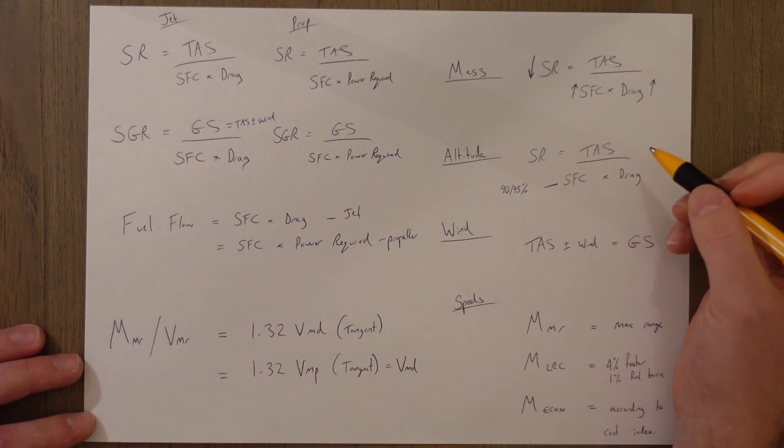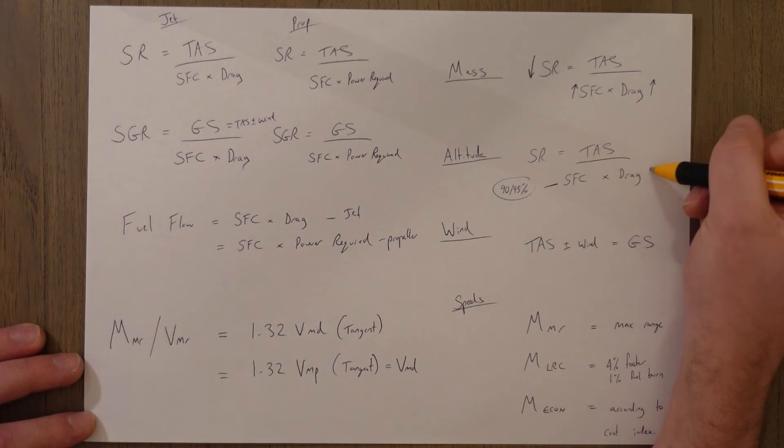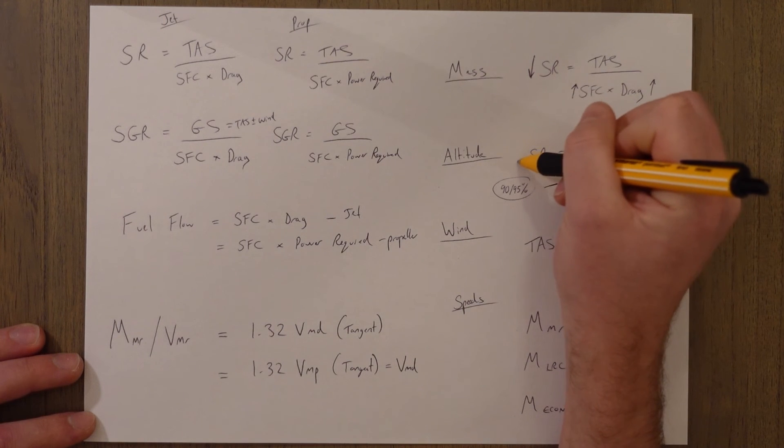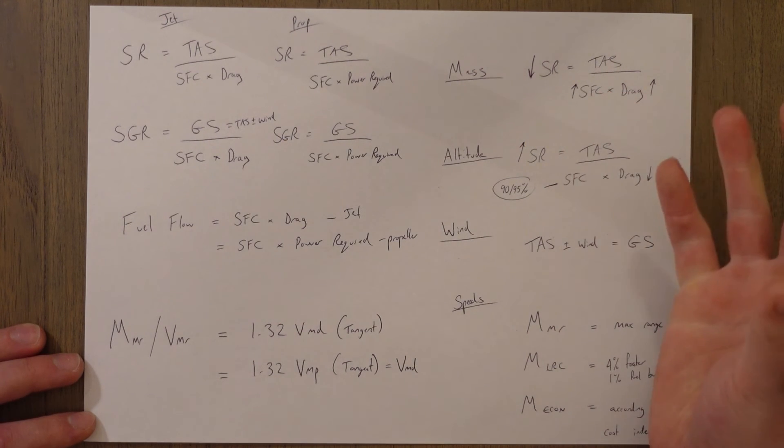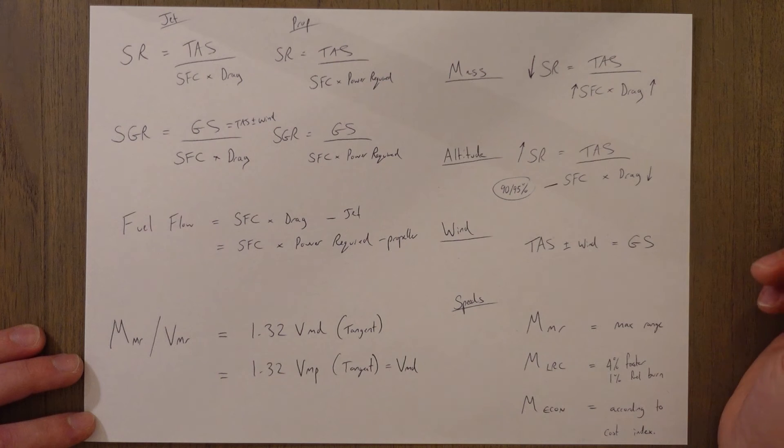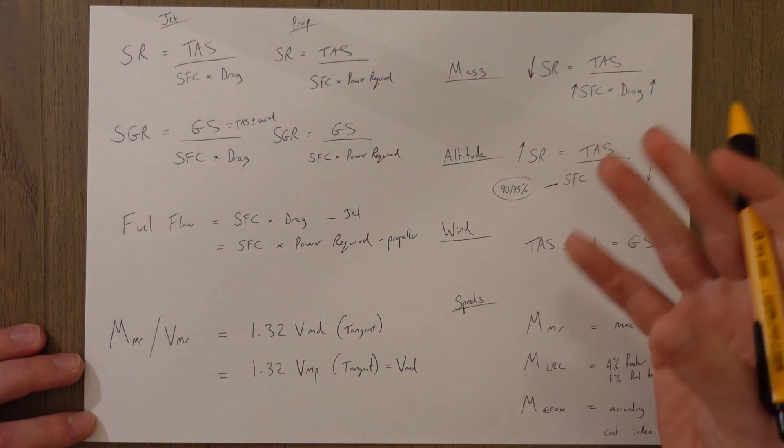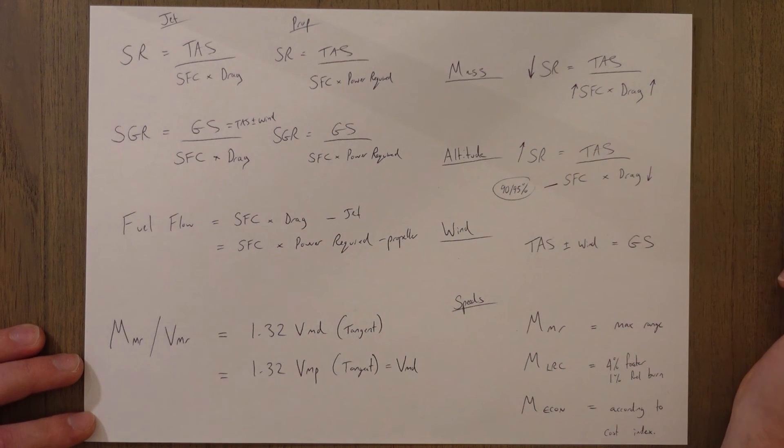Altitude for a jet basically means that we're operating in the ideal zone for our engines, and the drag is lower, meaning that specific range goes up. In a propeller aircraft, it's a bit different - you basically fly at what the manufacturer has tested and found to be the most efficient.